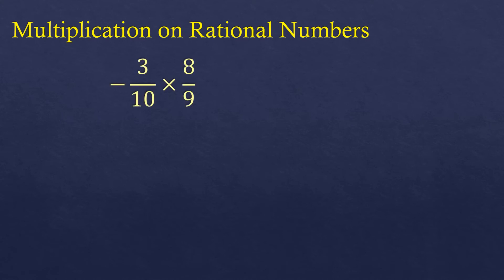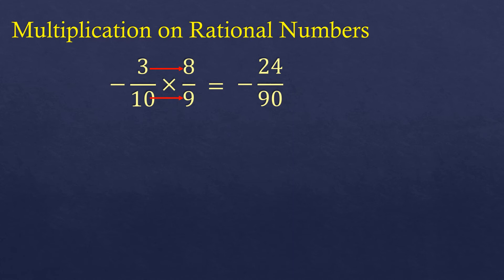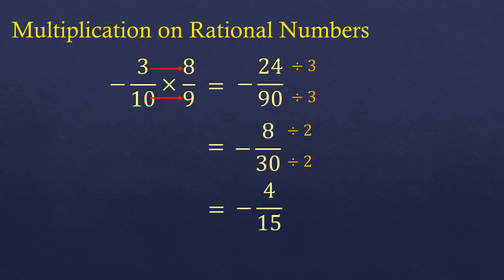Next is multiplication of rational numbers, which is very simple. For example, negative three-tenths times eight-ninths. We simply multiply numerator by numerator and denominator by denominator: three times eight is 24, and ten times nine is 90. Since the signs are different, the result is negative, giving negative 24 over 90. We reduce it: both are divisible by three, giving negative eight over 30, then both are divisible by two, giving the final answer negative four over 15.